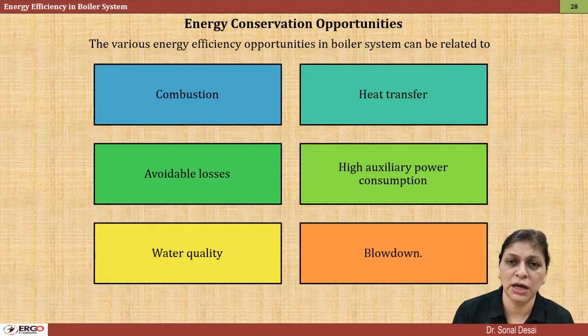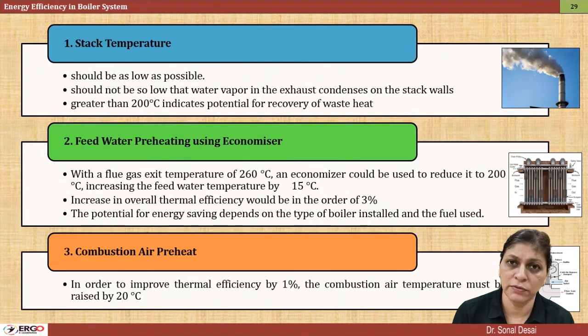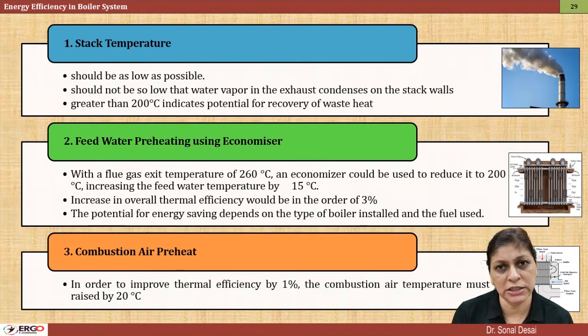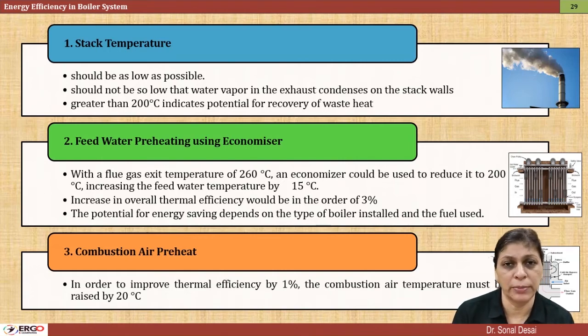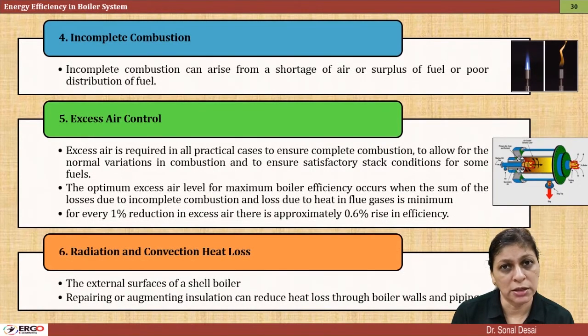More than 15 energy saving options are there. They show how to reduce flue gas temperature by utilizing waste heat, what is the role of different heat exchangers in a boiler, how combustion preheat and air preheat work, and incomplete combustion sensing — all of these are discussed. Many more methods of energy saving have been covered in this series, and ultimately it is very useful if you are working around the boiler. Thank you.